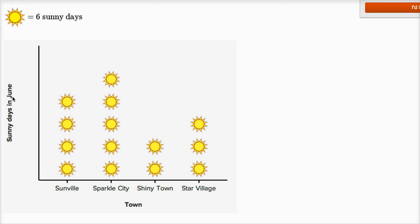So which of these had fewer than 30 sunny days? You can just look at the picture graph itself — Sunville, Shinytown, and Star Village don't have as many pictures of the sun, so they all had fewer sunny days.